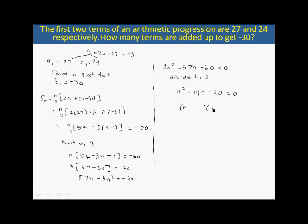Can we factor this out? That'll make it (n - 20)(n + 1) = 0. So n equals 20, or n equals negative 1.